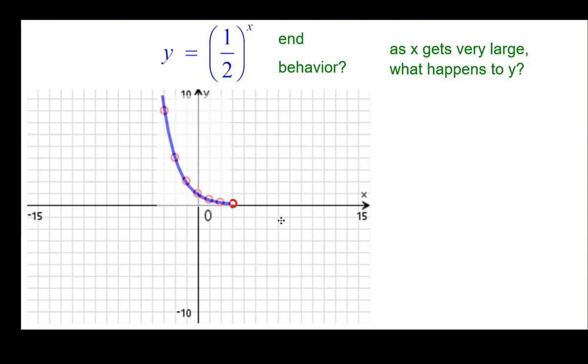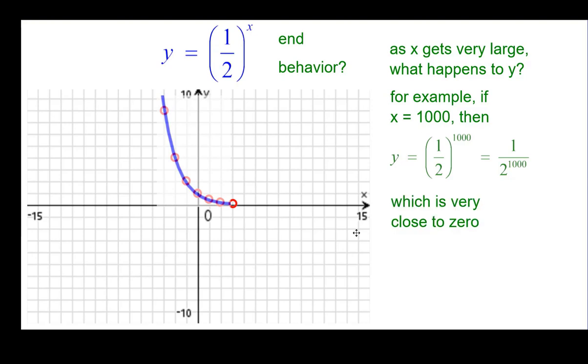As x gets very large in the positive direction, what happens to the values for y? For example, if x is a thousand, which is not really large in the scheme of things. But one half to the thousandth power. It would be a half times a half times a half, or it could be one over two to the one thousandth, which is one over a huge number, which is very, very small. Very, very positive but close to zero and positive.